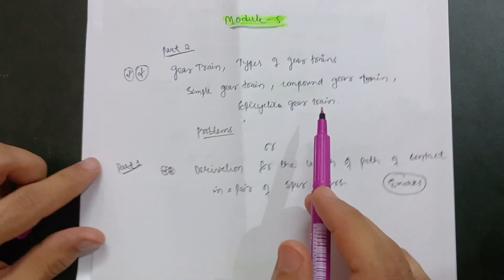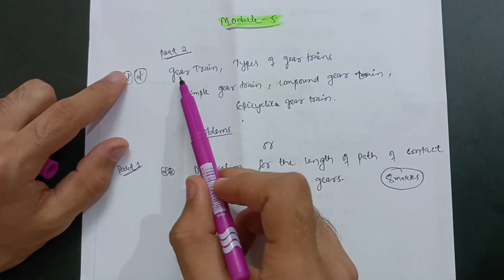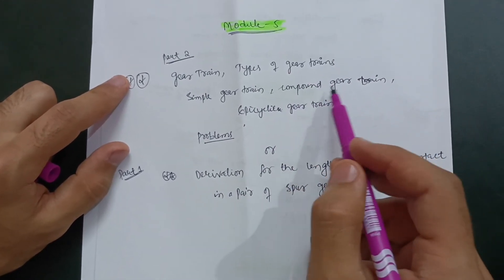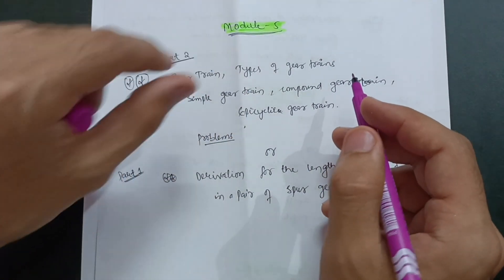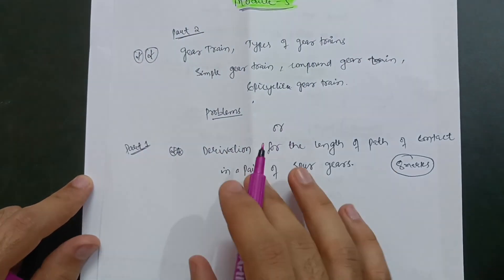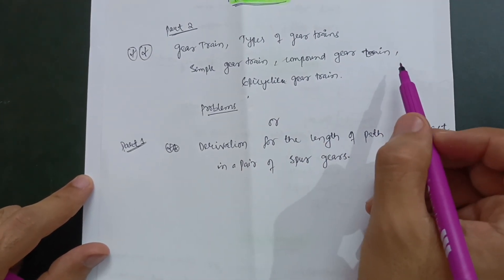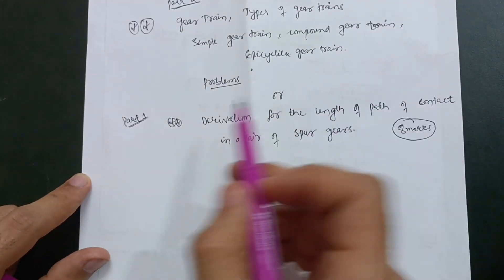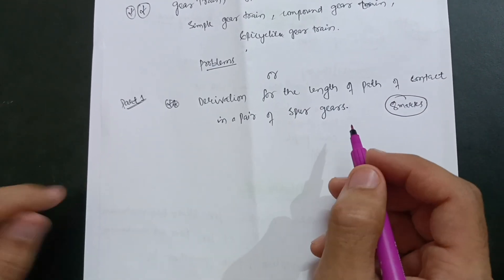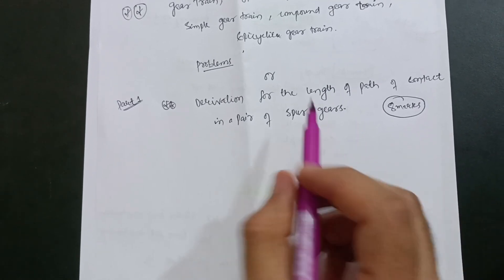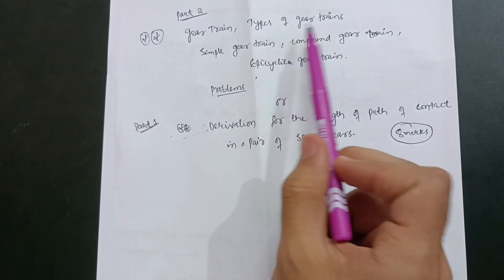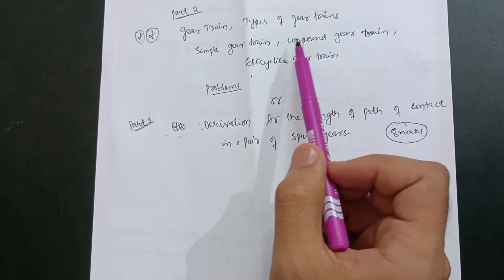In module 5 there are two parts. The second part covers gear trains - types of gear trains, simple gear trains, and compound gear trains. This theory carries 6 marks. Problems based on gear trains are also simple, so go through them to conquer at least 10 to 15 marks in this module. The first part has a definite question: the derivation for the length of path of contact in a pair of spur gears. However, gear train problems are simpler, so choose whichever is more convenient for you.